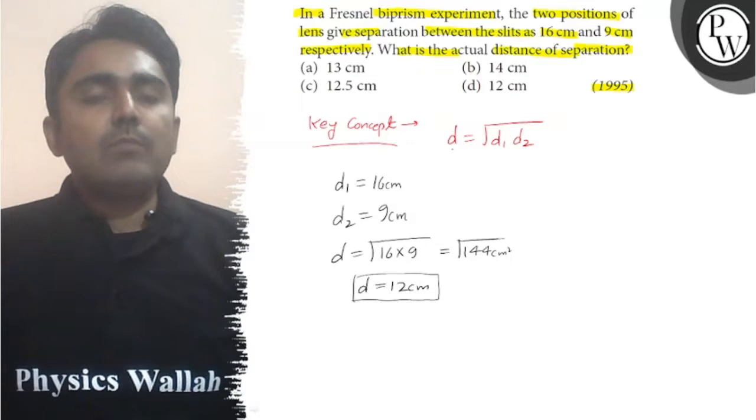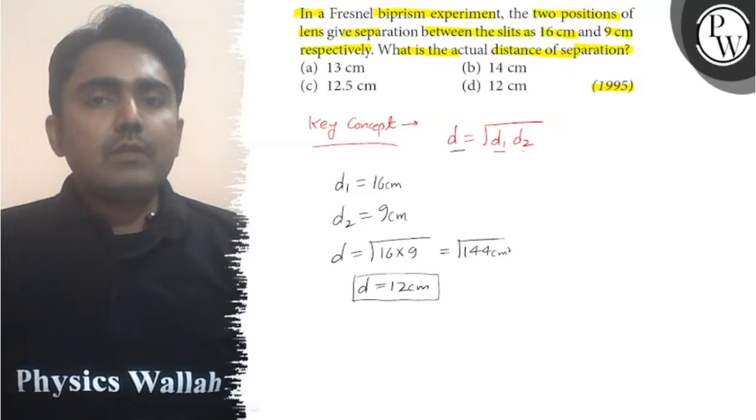Using the formula for actual distance of separation, we applied the square root of d1 times d2 and got 12cm. So option d is correct.